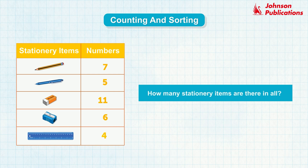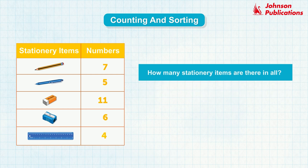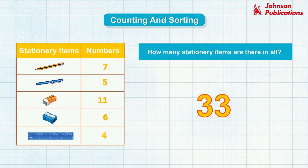How many stationary items are there in all? Let us add all the numbers of stationary items. 7 plus 5 plus 11 plus 6 plus 4 equals 33. So there are 33 stationary items in all.